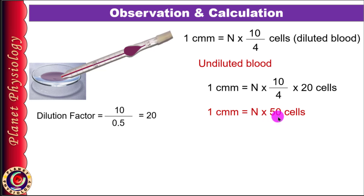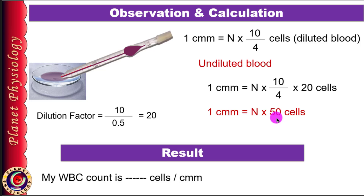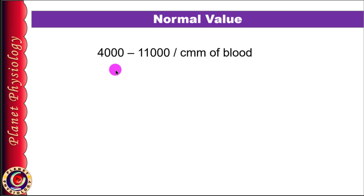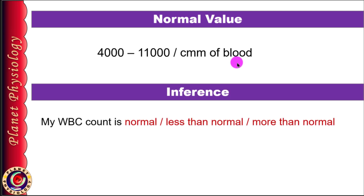The normal WBC count ranges between 4,000 to 11,000 per cubic millimeter. Compare your result with this normal range and conclude whether your count is within the normal range, less than normal, or more than normal. This completes your procedure for WBC count.